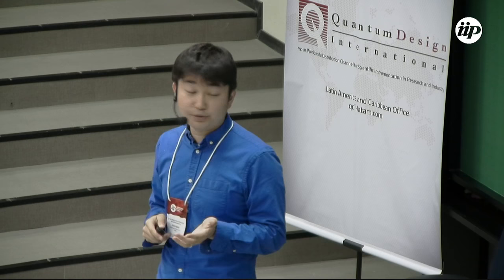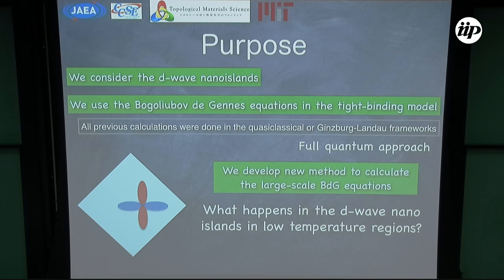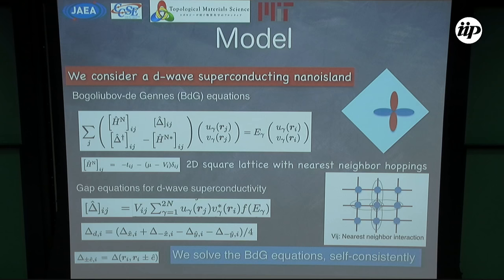We consider diamond-shaped nano islands in real space and solve the BdG equation and the gap equation self-consistently. I want to know what happens in the d-wave nano islands in the low temperature region.